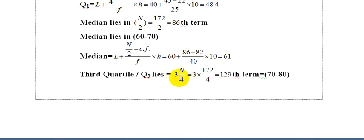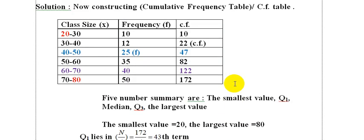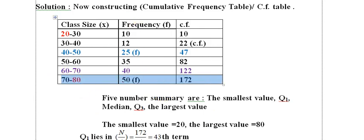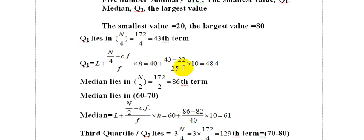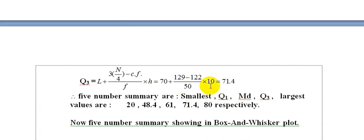For Q3, we use 3N by 4. Three multiplied by 172 divided by 4 equals 129. Using the Q3 formula, Q3 equals 71.4. So the five-number summary is: smallest value 20, Q1 is 48.4, median is 61, Q3 is 71.4, and largest value is 80.